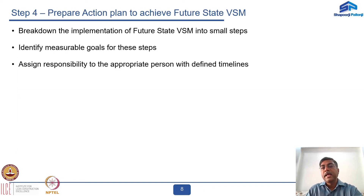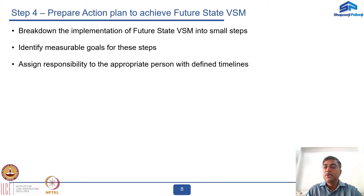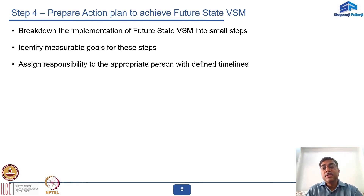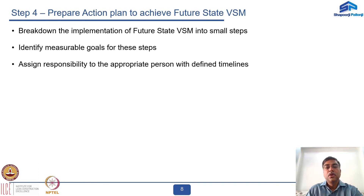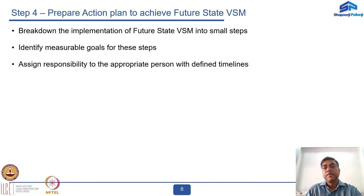Step four is to prepare an action plan to achieve the future state value stream map. Break down the implementation into small steps. Identify measurable goals for these steps. Assign responsibilities to the appropriate person with defined timelines so that the activities are completed on schedule, enabling us to achieve the future state value stream map. This completes the exercise from step one through step four.